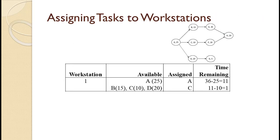At the first workstation, the only task we can assign first is A. Assigning A takes up 25 seconds, leaving 11 seconds available for additional work. With A assigned, B, C, and D are all available to be assigned. However, B takes 15 seconds and D takes 20 seconds, and only 11 seconds are available. That means C is the only available activity that can be assigned to workstation 1, so we assign C. That leaves 11 minus 10 equals 1 second of free time — not enough to do anything else, so we move to the next workstation.